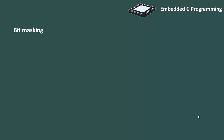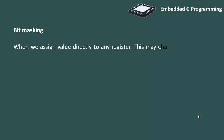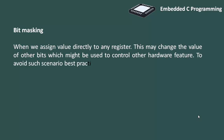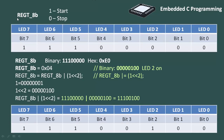Bit masking is a very important topic in embedded C programming. When we assign a value directly to any register, this may change the value of other bits which might be used to control other hardware features. To avoid such a scenario, the best practice is to use bit masking. This is why we must know bit masking while using bitwise operations in embedded C programming.